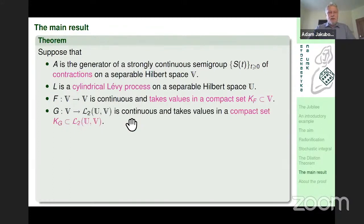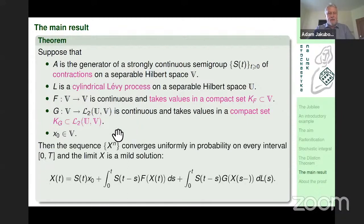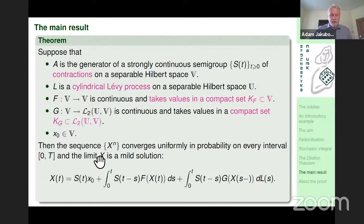Similarly, g is continuous and takes values in a compact set of Hilbert-Schmidt operators. Given an initial condition x₀, the sequence of discretizations described before converges uniformly in probability on every finite interval to some process x, and the limit x is a mild solution satisfying exactly our equation. So we have solved the promised problem and are able to solve this equation under quite general assumptions, though with some technical restrictions.